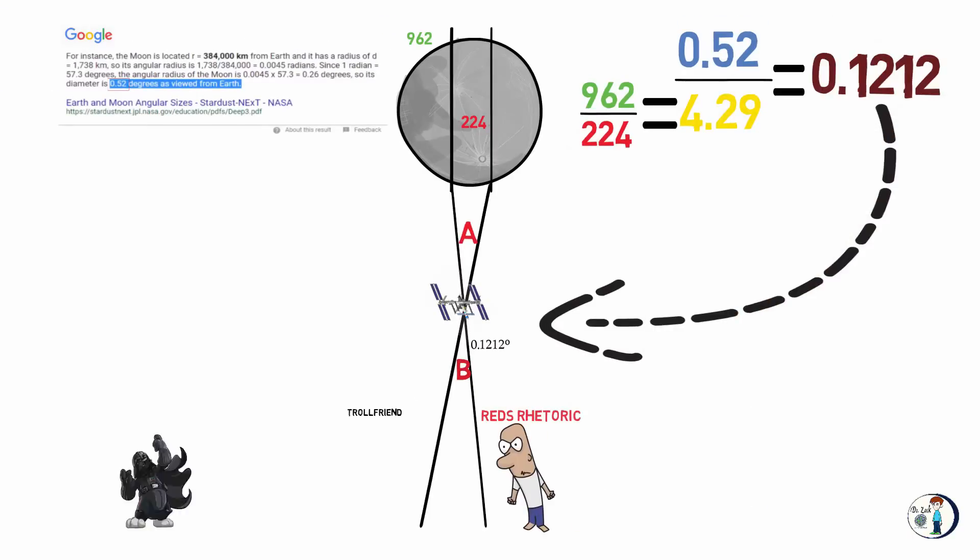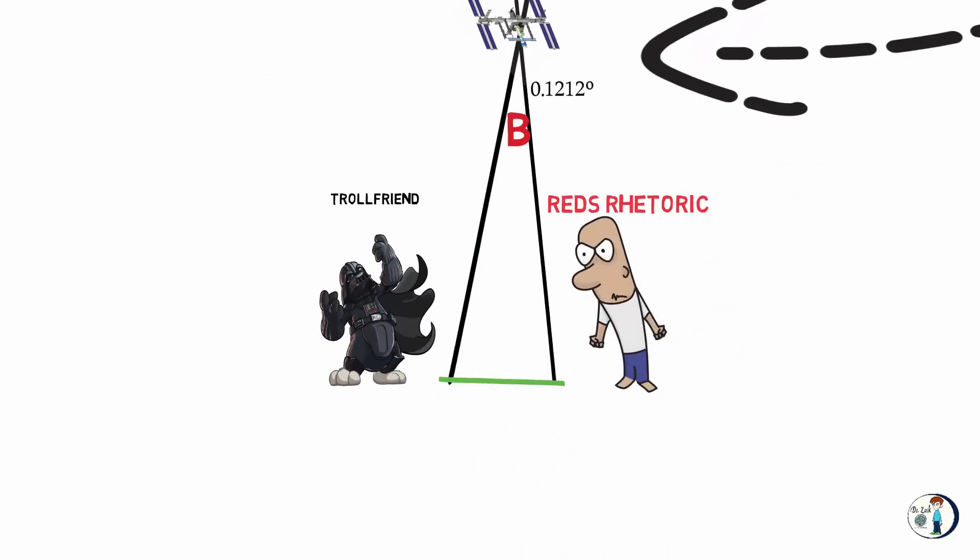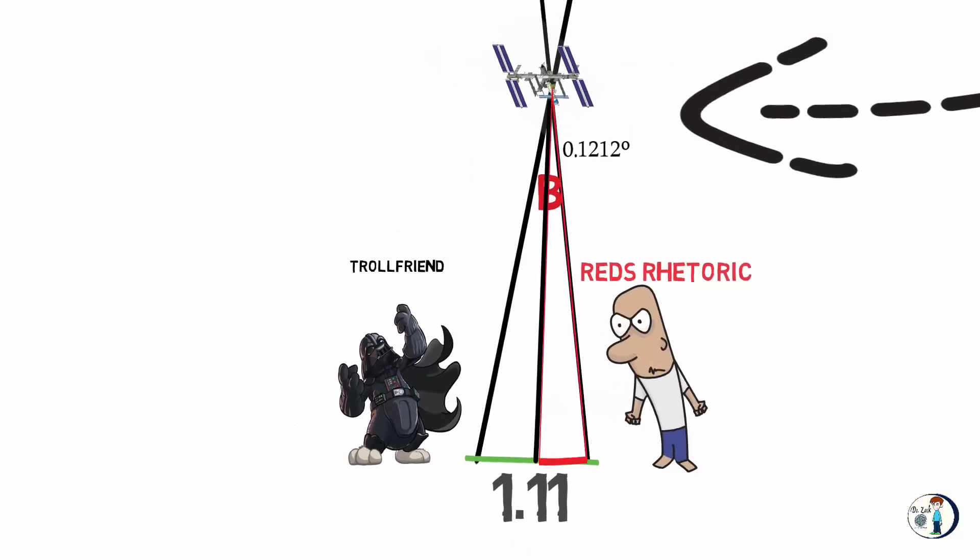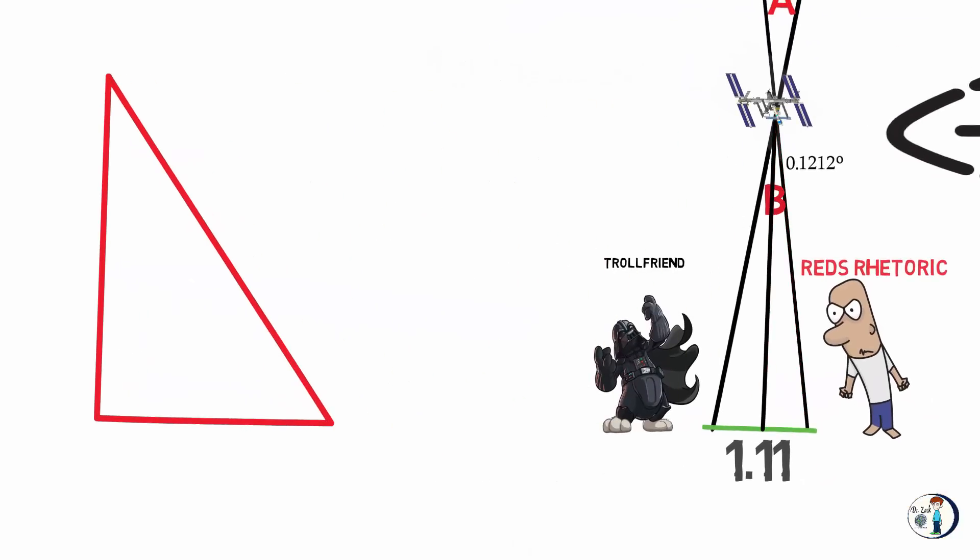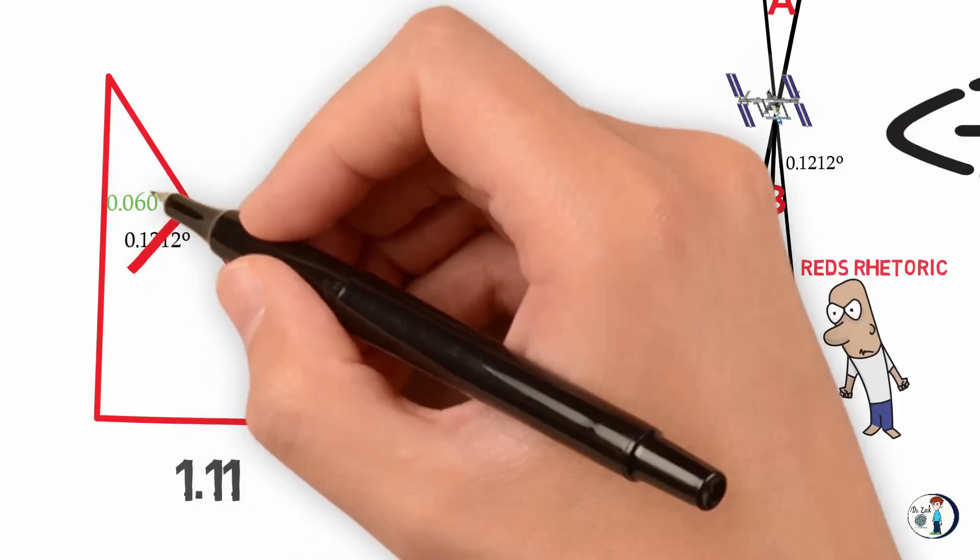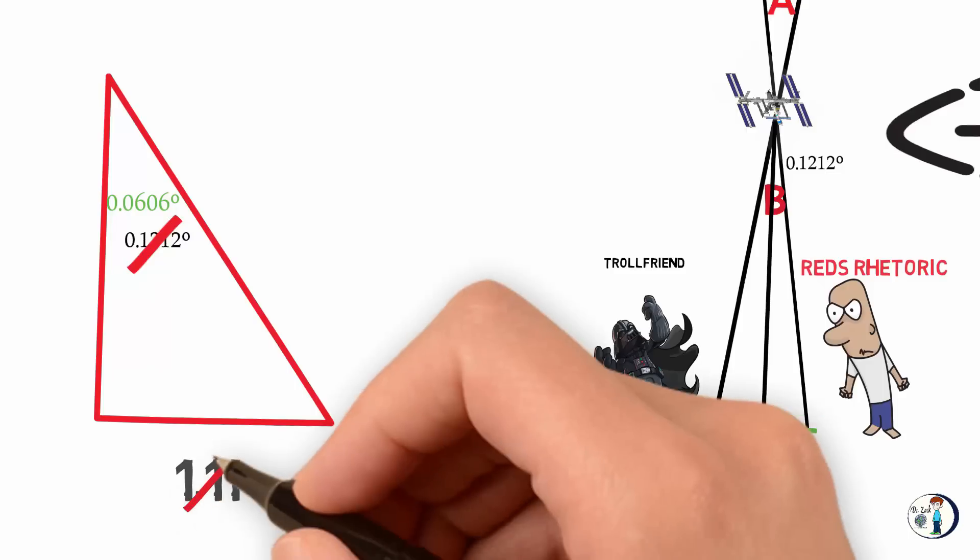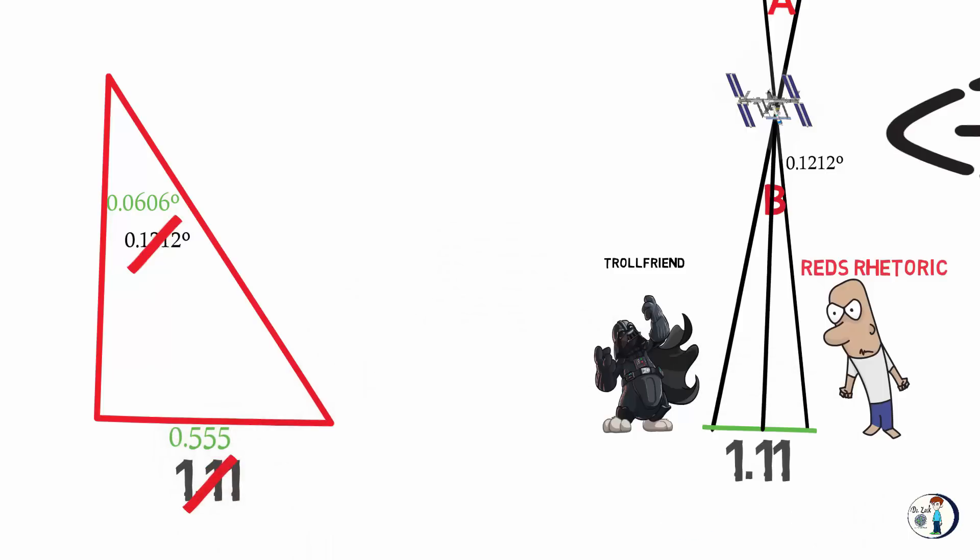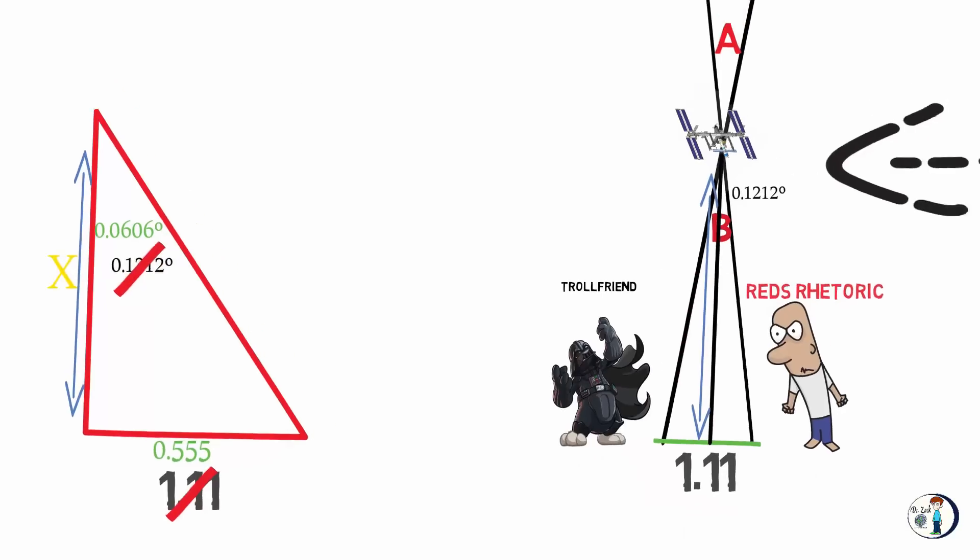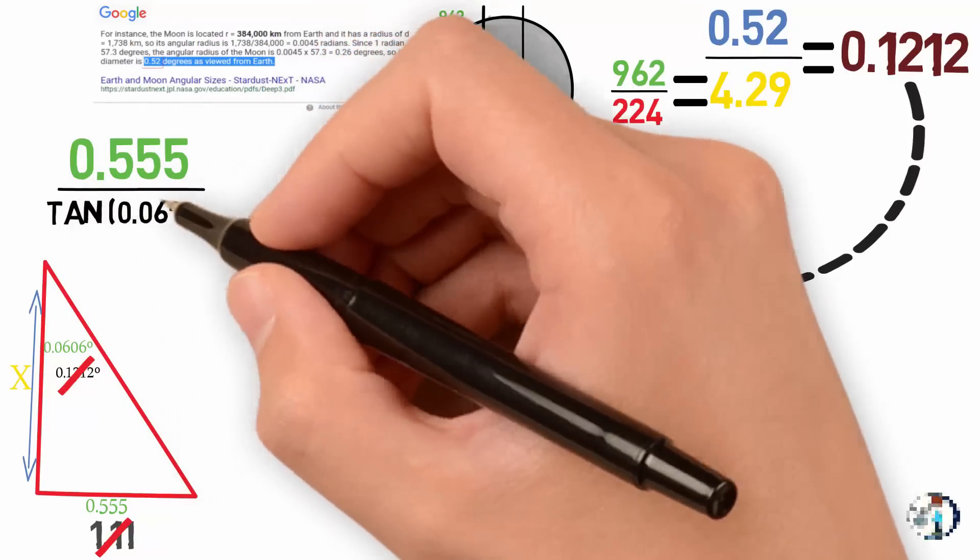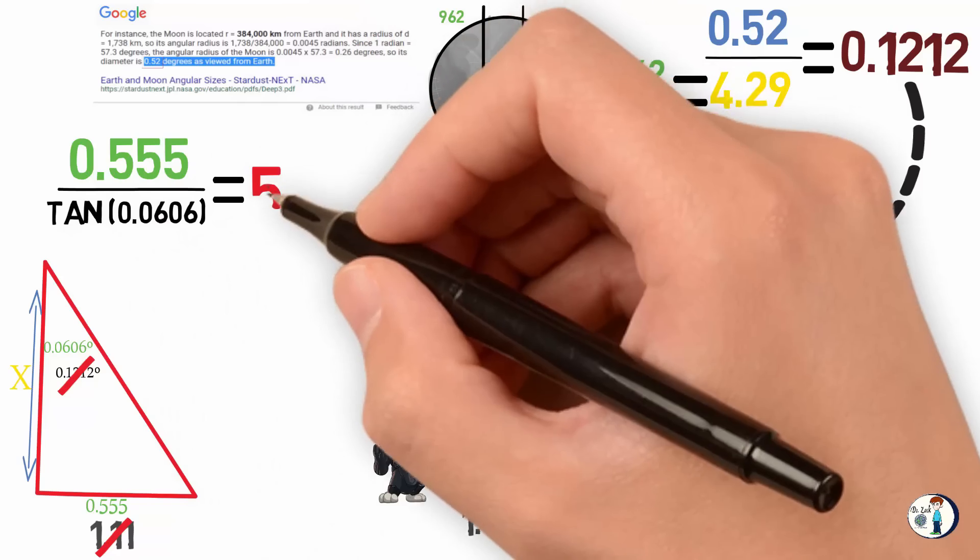Now he just needed the distance between him and his troll friend, which is 1.11 kilometers. He decided to cut the triangle in half, so 0.1212 becomes 0.0606, and 1.11 kilometers becomes 0.555 kilometers. Now he wants the distance X to the ISS. So he did 0.555 divided by tangent of 0.0606, and he got 524 kilometers.